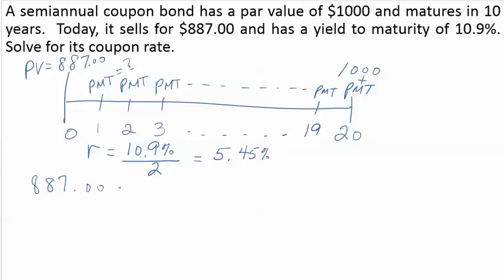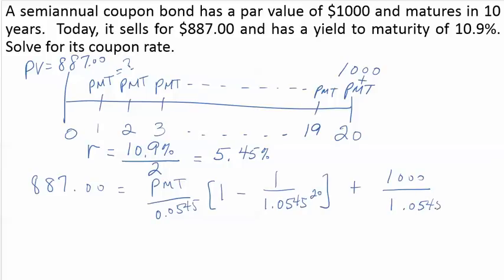So let's find out what the coupon payment is using the formula for the price of a coupon bond. So I'll put the payment there in for the present value of the annuity formula. We have the $1,000 face value received in 20 periods.